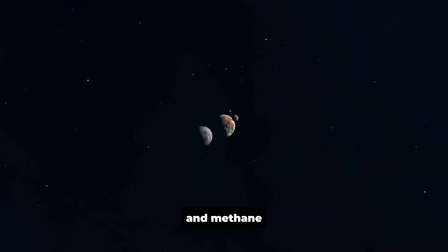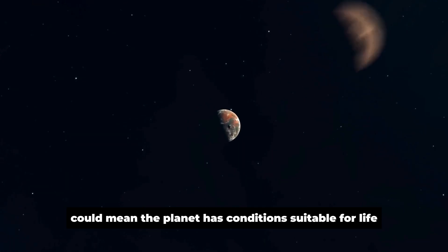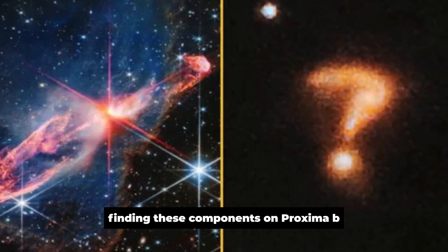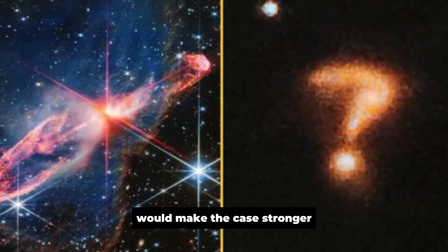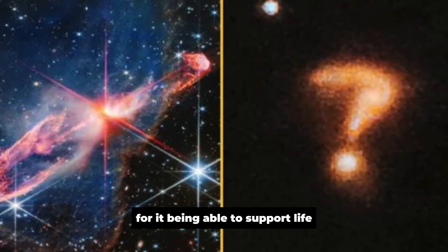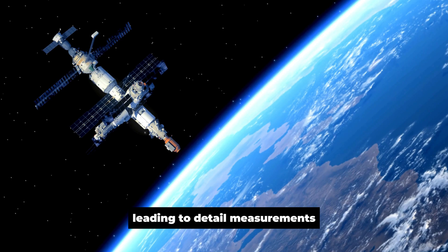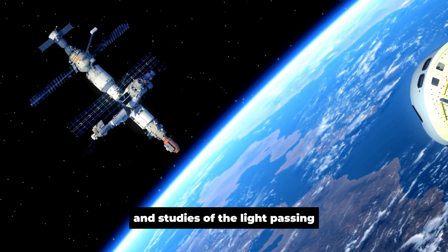and methane could mean the planet has conditions suitable for life. Finding these components on Proxima b would make the case stronger for it being able to support life, leading to detailed measurements and studies of the light passing through its atmosphere.